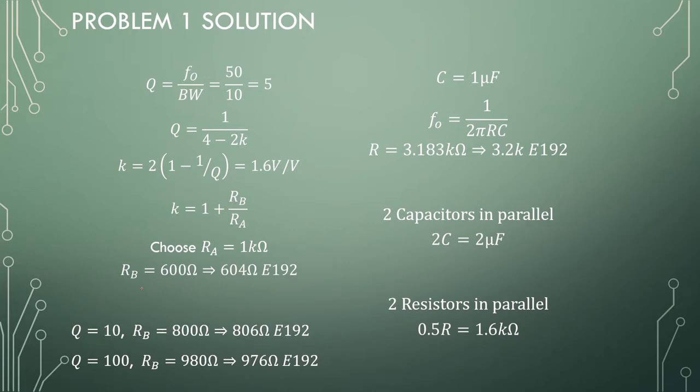Moving on, we can at this point design for a Q factor of 100. Since RB is responsible for the Q, we can just redesign the value of RB, and that goes to 980 Ohms, and 976 is the closest E192 value. Note that this is already coming extremely close to a 1 kOhm resistor, and the moment that this reaches 1 kOhm, our circuit can become unstable, because if this ratio k is equal to 2, always check that you don't push this filter with positive feedback to become an oscillator.